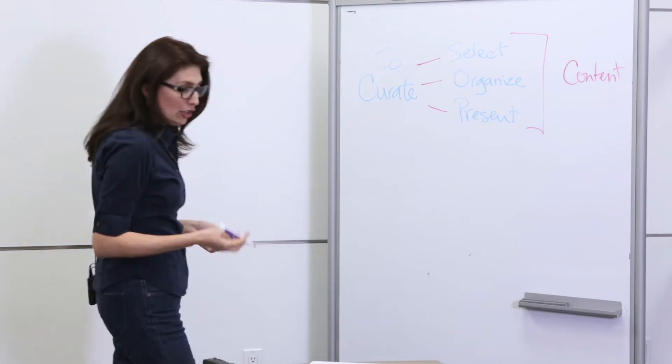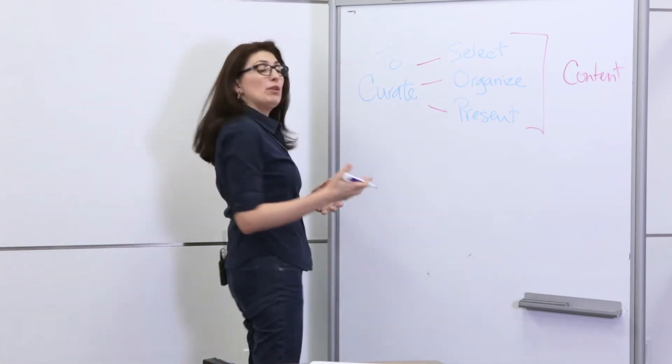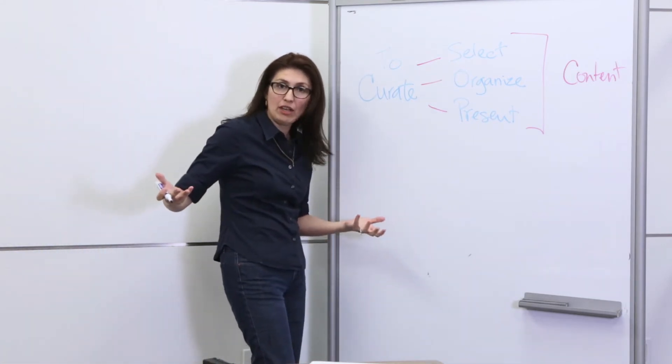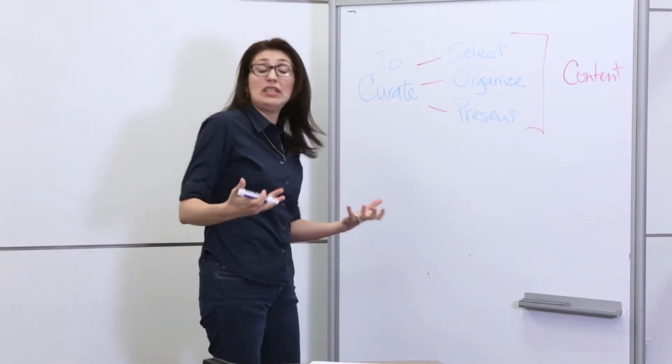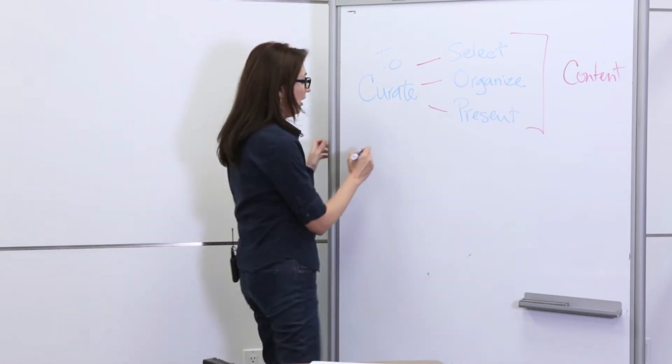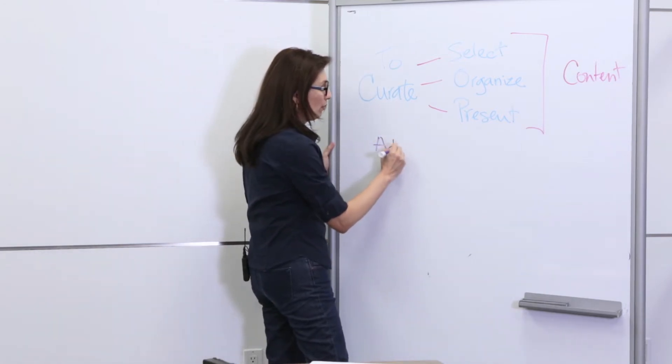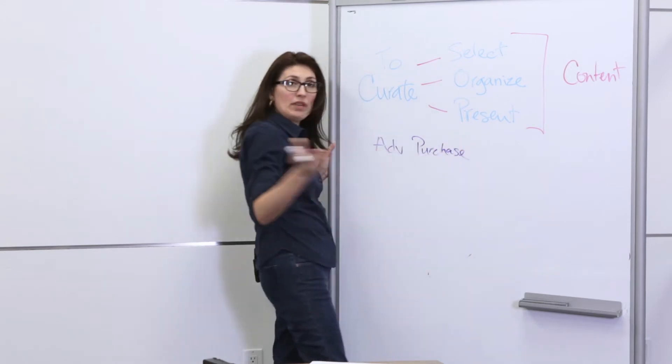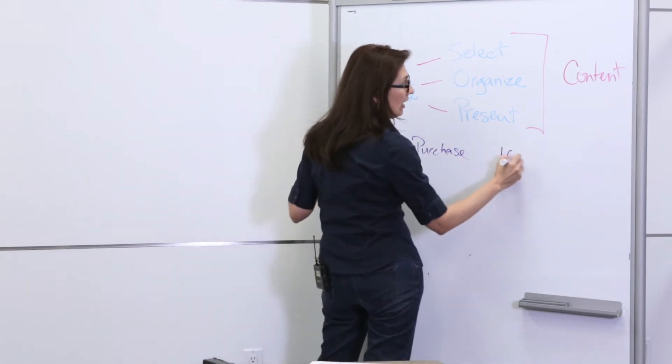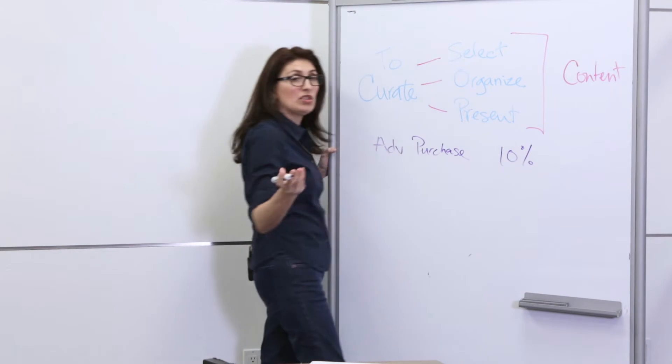Imagine that you have multiple offers depending on your revenue strategy and they have certain discounts derived from your best available rate. You might have an advance purchase rate. If they purchase X amount of days in advance, they get a percent off.